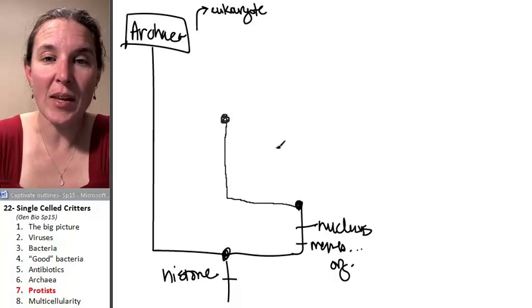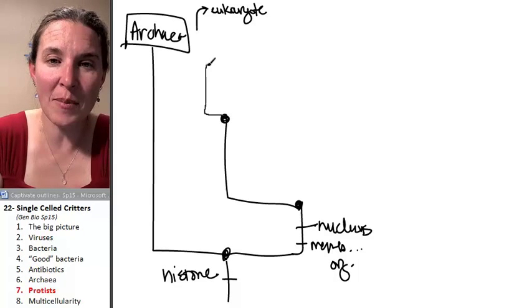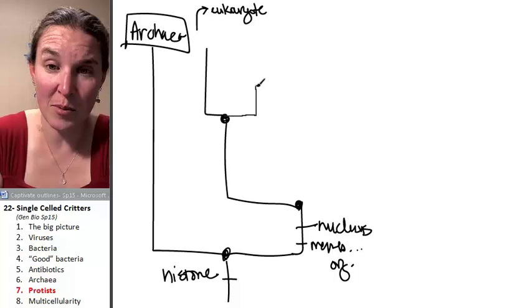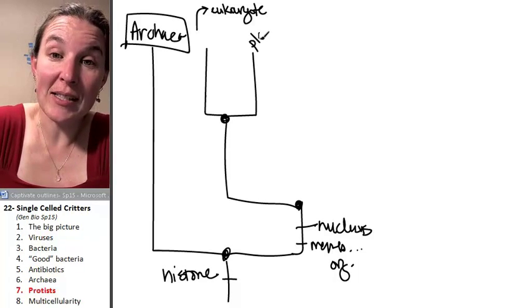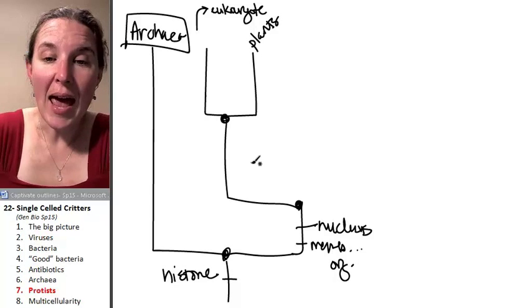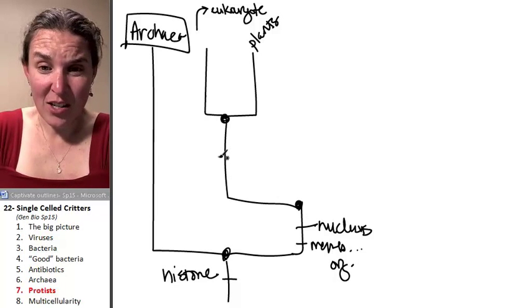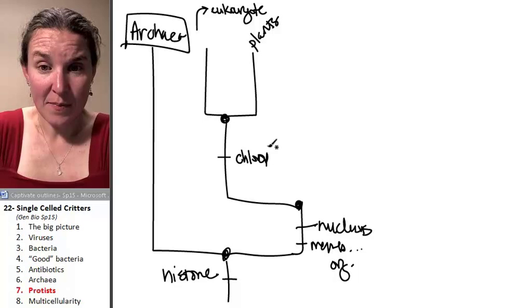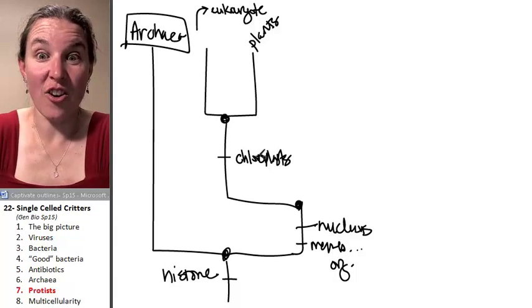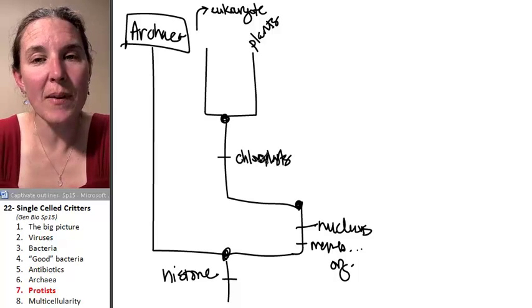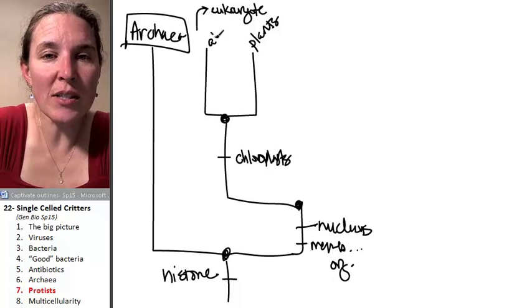And this branch, I'm going to run out of room here. So this is my branch that includes plants. And you can imagine, dude, let's get some chloroplasts. So our membrane-bound organelles are going to include chloroplasts. And it also includes algae.